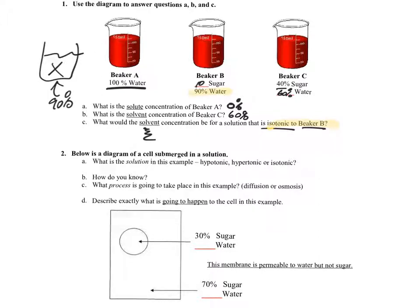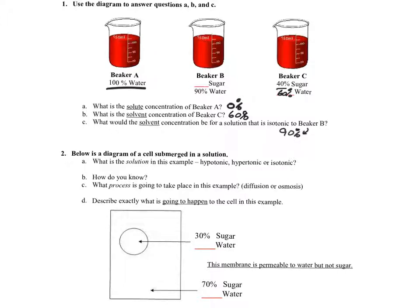What would the solvent concentration be for the solution that is isotonic to beaker B? The solvent concentration of something isotonic — you have another solution that's isotonic, correct? It would be 90%. That was to see if you're paying attention, because they didn't ask for the solute concentration. They wanted the solvent concentration. Of course, this is 10%.